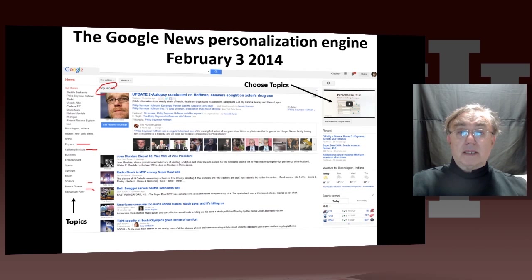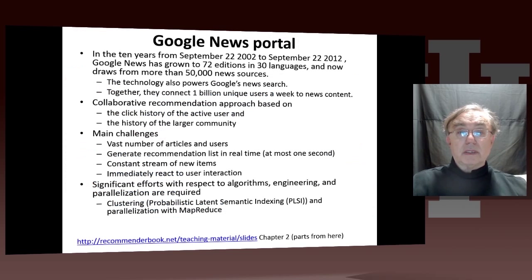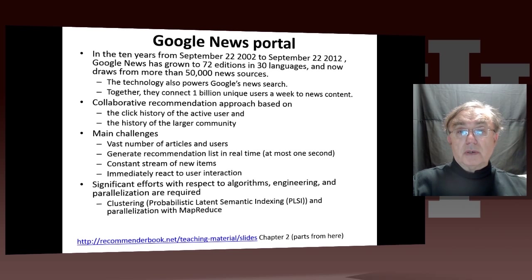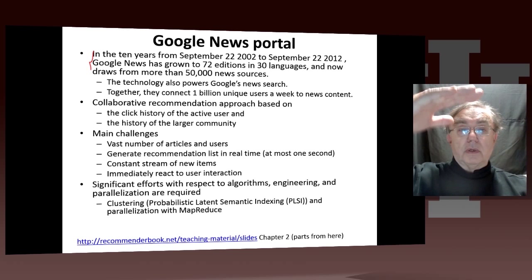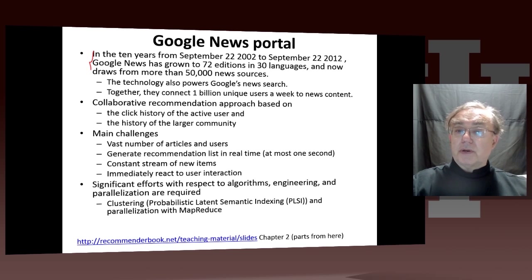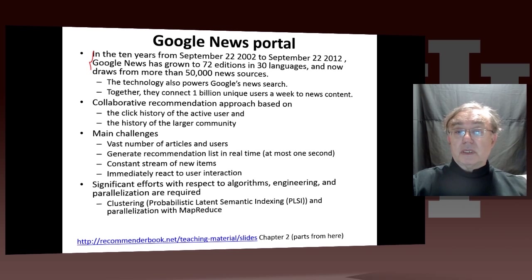The method is nearer to clustering than recommender systems. Google News now has 72 editions, 30 languages, and 50,000 news sources. It gives you a set of fixed topics with a certain number of items per topic, and you can search by typing criteria to find results from those news sources. They have about a billion users using this technology — that's a big number.